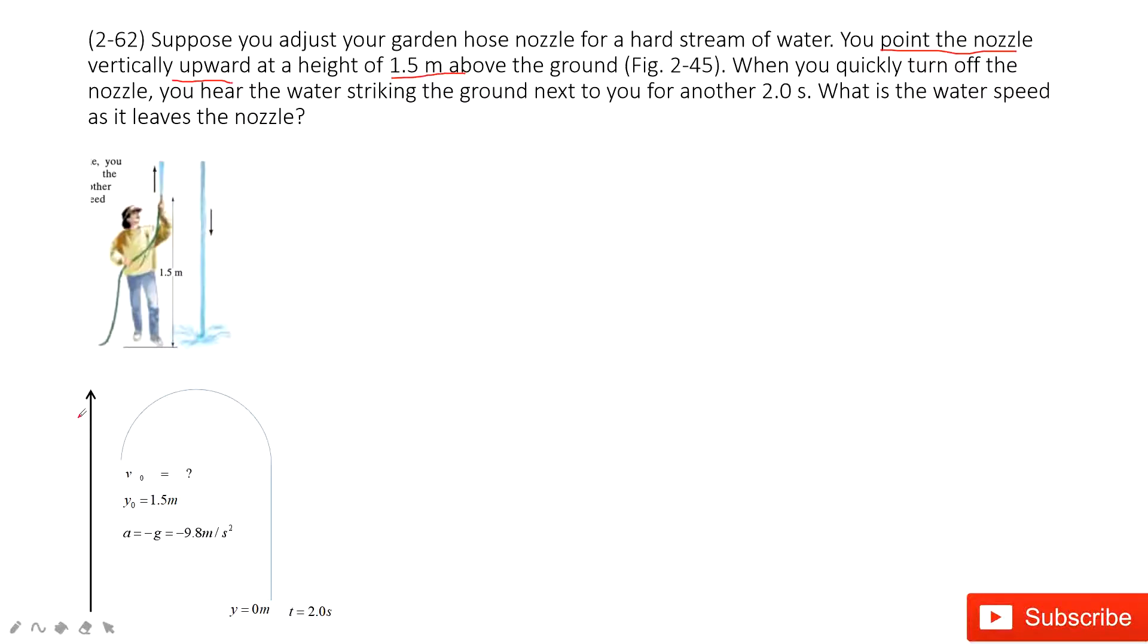So we choose up as the positive direction. Because this is a projectile problem, there is acceleration due to gravity. This is 9.8 meters per second squared, but acceleration due to gravity always points down, so we must keep the negative sign there.